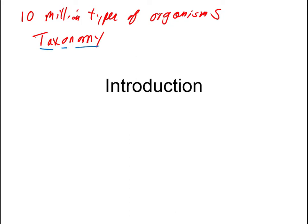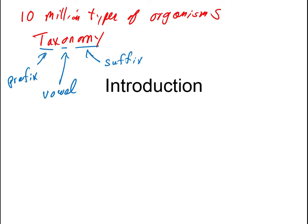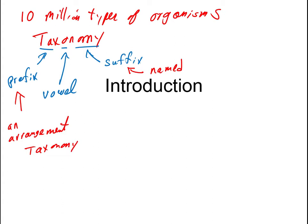The three parts of this word are a prefix, a suffix, and in the middle a connecting vowel. All Greek and Latin scientific words are constructed this way — sometimes three parts, but generally just two. The prefix 'tax' means arrangement, and the suffix 'nomi' means named, with the vowel linking the two together. So taxonomy is the science of creating named arrangements.